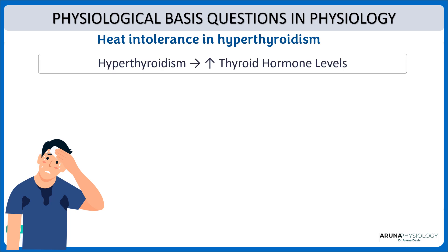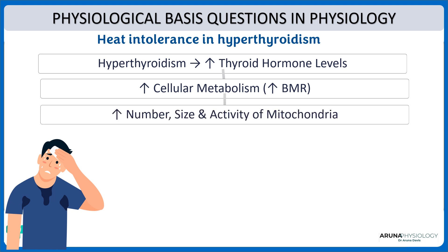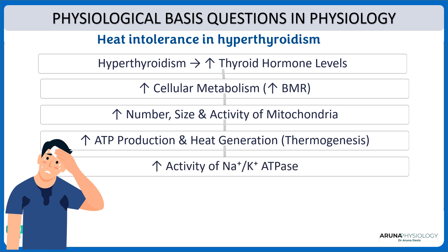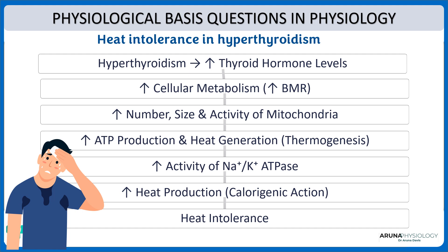In hyperthyroidism we have increased thyroid hormone levels, and thyroid hormone increases cellular metabolism. So naturally there will be increased cellular metabolism which means there will be an increased basal metabolic rate. It also increases the number, size and activity of mitochondria, so there will be increased ATP production and heat generation — increased thermogenesis. Thyroid hormone also increases sodium-potassium ATPase activity, leading to increased heat production — the calorogenic action — and thus patients with hyperthyroidism will not be able to tolerate heat.